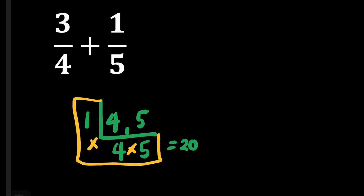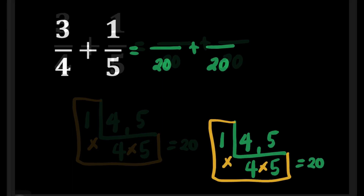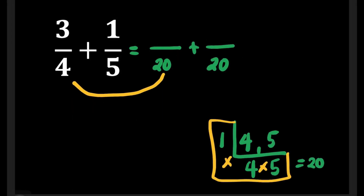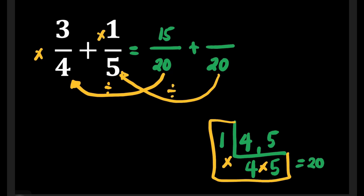Now we're ready to copy the 20. We'll put 20 here and 20 here. 20 divided by 4 is equal to 5, times 3 is equal to 15. So, we'll put 15 here. Next, 20 divided by 5 is equal to 4, times 1 is equal to 4.